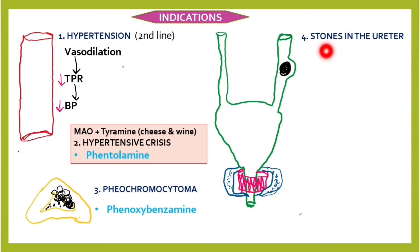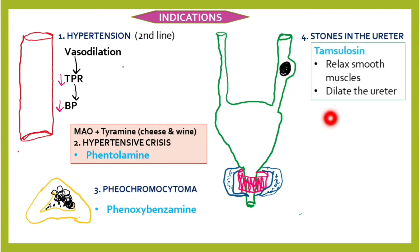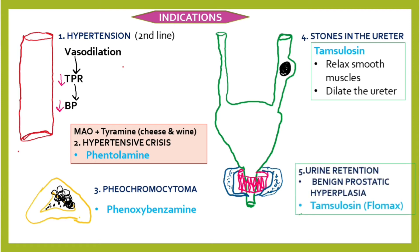We can also use alpha blockers for stones in the ureter. The alpha blockers relax the smooth muscles, causing dilation of the ureter, and the best drug is tamsulosin. The next indication is urinary retention secondary to benign prostatic hyperplasia, and the best drug here is tamsulosin (Flomax).